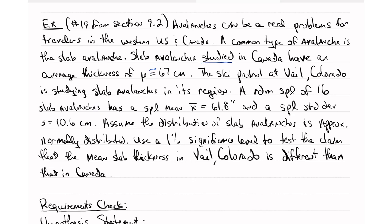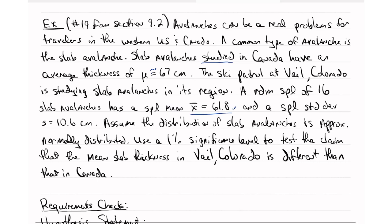It says that the ski patrol at Vail, Colorado is studying slab avalanches in its region. A random sample of avalanches in spring gave the following thicknesses, and they list out 2, 4, 6, 8, 10, 12, 14, 16 values. But they also give you the sample mean, which is 61.8, and that is not inches, that is centimeters, and a sample standard deviation of 10.6 centimeters.